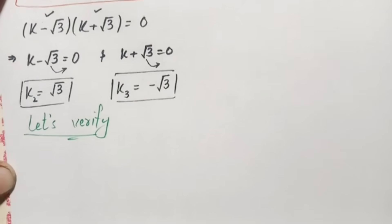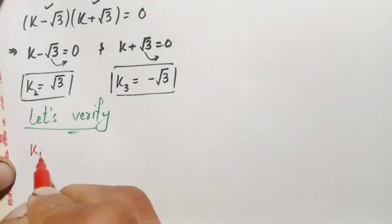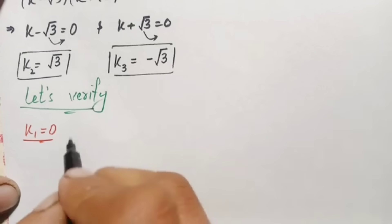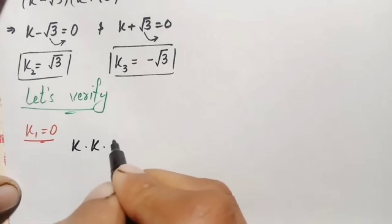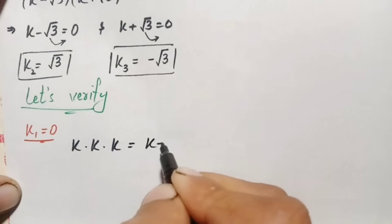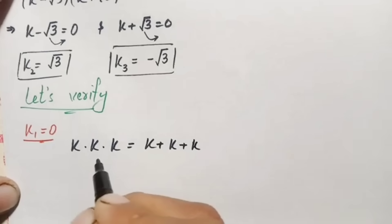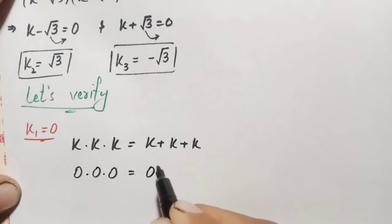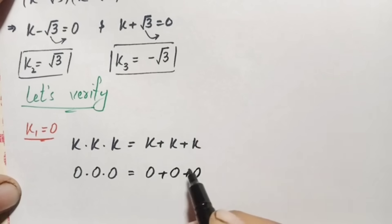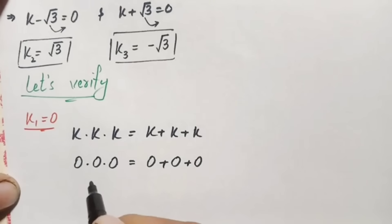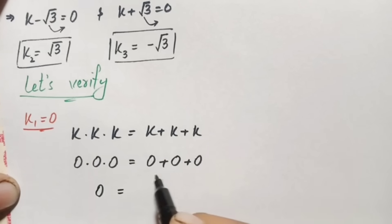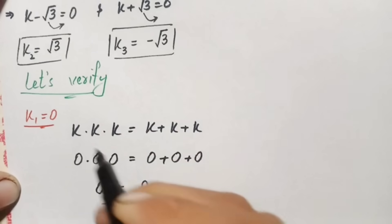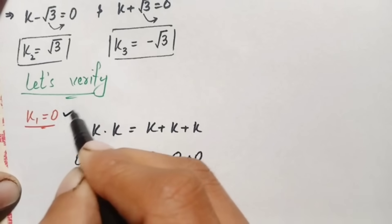Let us verify k₁ equals zero. The problem is k times k times k equals k plus k plus k. Replacing k with zero: zero times zero times zero equals zero plus zero plus zero. Multiplying zero any number of times is always zero, and adding zero any number of times is also zero. Both sides are equal, so k₁ equals zero is a correct solution.